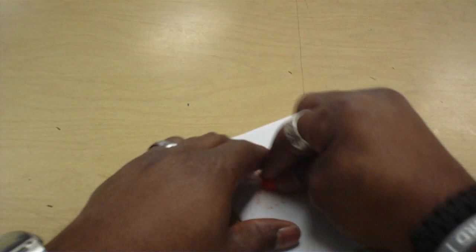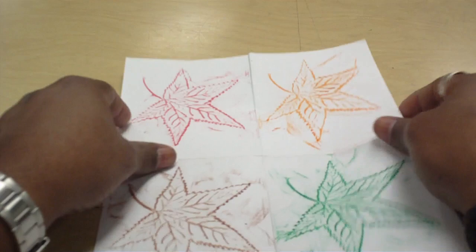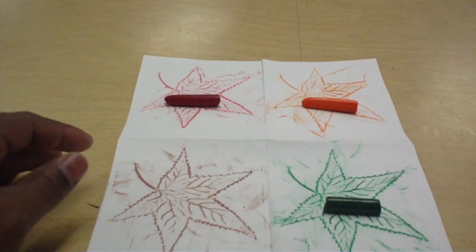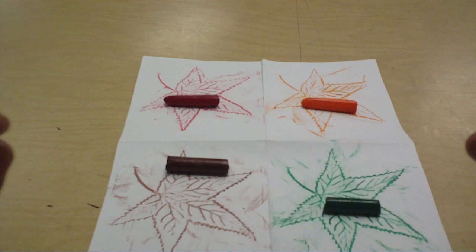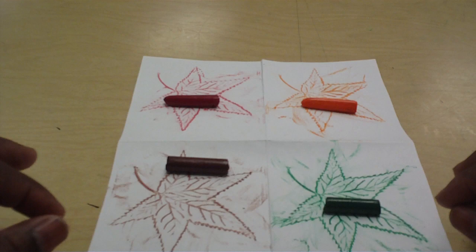All right now when you open it up you're gonna have your piece you have the leaf in all four sections. Now only things left to do is to cover the background. The only thing I'm going to say about the backgrounds is don't use the same color in the background as you used for the leaf. Let's mix it up a little bit switch it around.